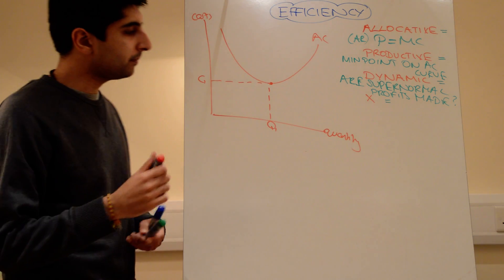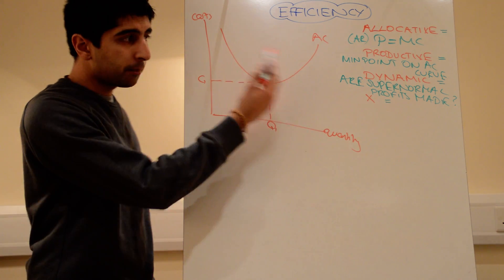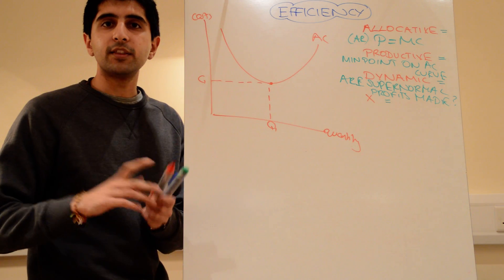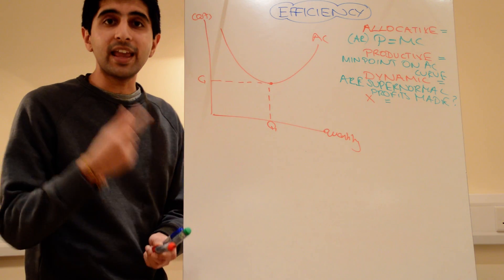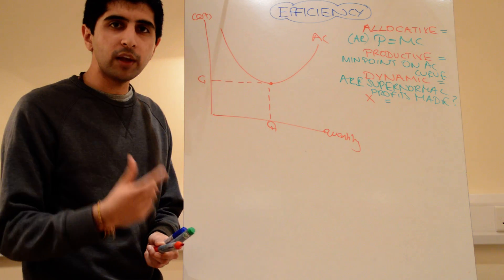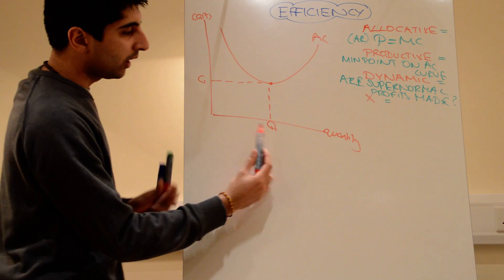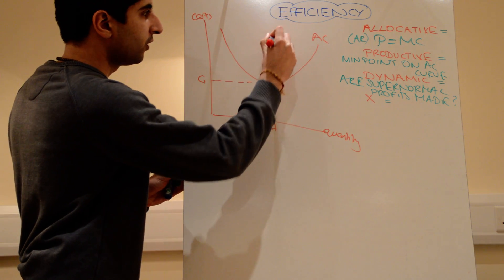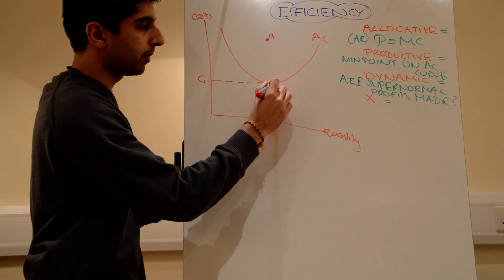And finally, X-inefficiency. If I go back to this same diagram, X-inefficiency basically means that there is no waste. If firms are X inefficient, it means they're being wasteful. What does that mean? At this level of quantity, let's say the firm is actually producing at point A. I'll call the minimum point, point B.